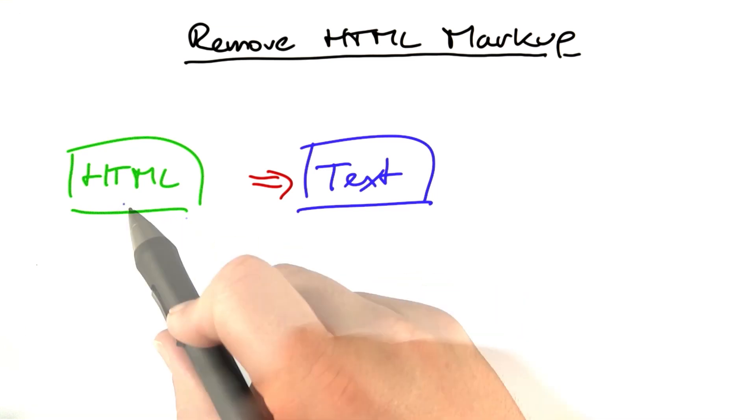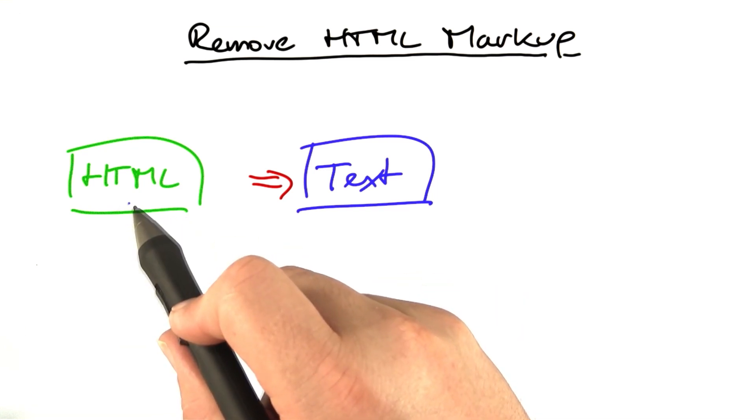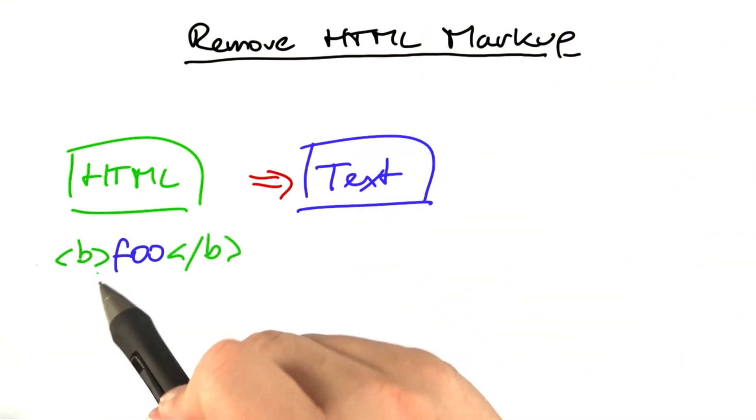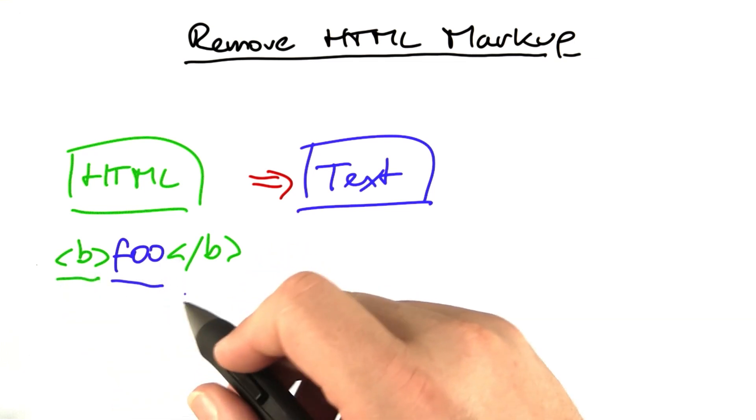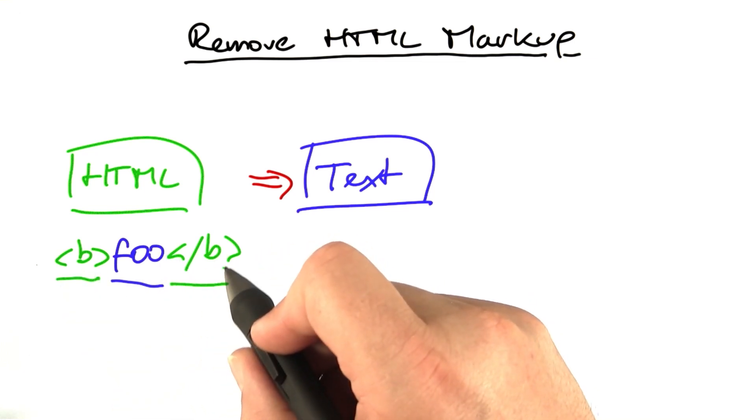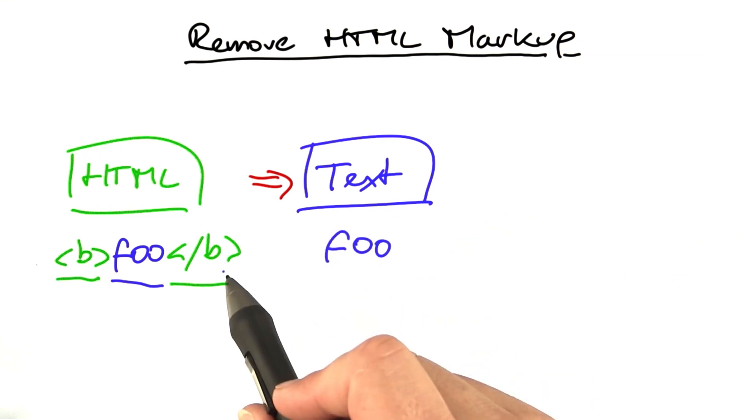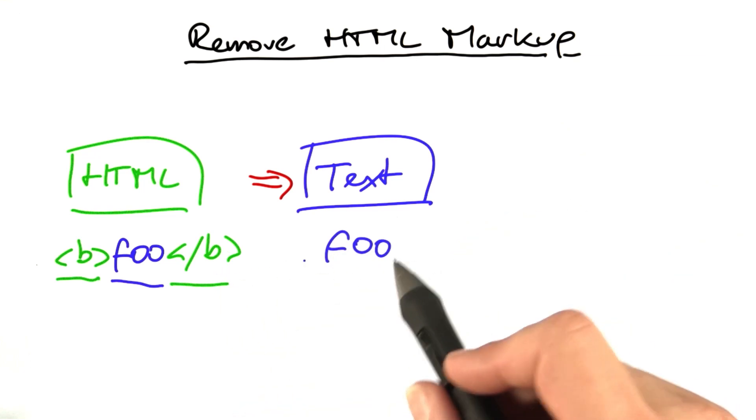The idea is to write a function that takes an HTML input—that is, text together with HTML markup—and returns just the text. For instance, if the input is HTML markup for bold, followed by a text foo, followed by HTML markup for end of bold, then we want to return just the text. Anything that is within these angle brackets should be stripped away.